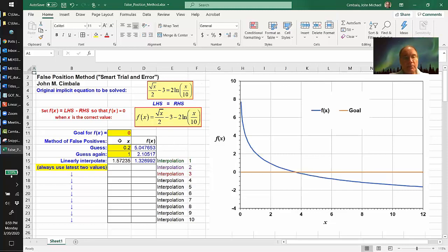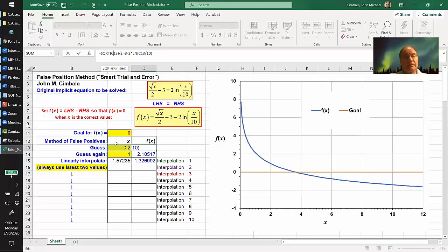I create a table of X and f of X. For any X I can calculate f of X using this equation. The equation is square root of X, which is this value, over 2.2 minus 3 minus 2 natural log X over 10. So that's the correct equation. And I just make two guesses and calculate f of X.